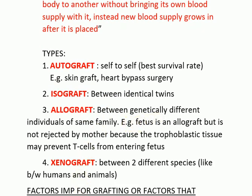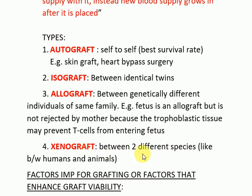The allograft is between genetically different individuals of the same family. For example, a fetus is an allograft but it is not rejected by the mother because the trophoblastic tissue may prevent T-cells from entering the fetus. So when grafting is taken from one member of the same family to another, that is an allograft.